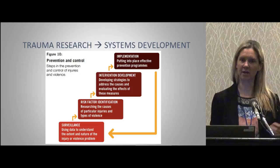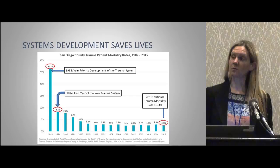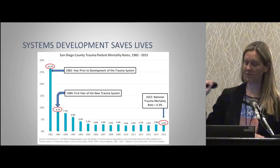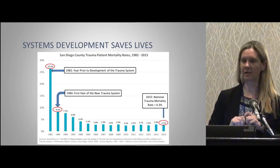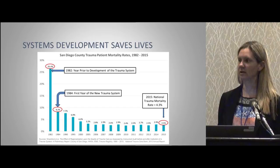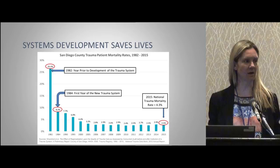Before the San Diego trauma system was developed in the 1980s, we had a 26% patient mortality rate. The year after the system started — by doing nothing but putting in a system, by organizing which patients go to which hospitals — we dropped to an 8% mortality rate. We cut it to roughly a third just by getting organized. You can do the same thing in other places, and it's not as labor-intensive as many other interventions.